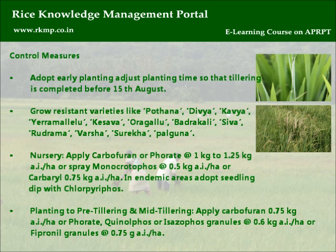Grow resistant varieties like Potana, Divya, Kavya, Erramallelu, Kesava, Orugallu, Bhadrakali, Siva, Rudrama, Varsha, Surekha, and Palguna.